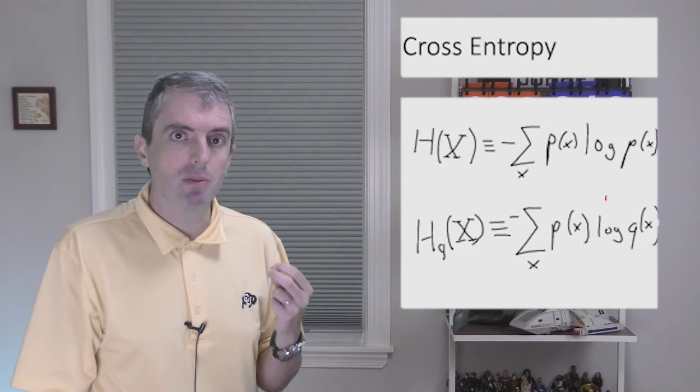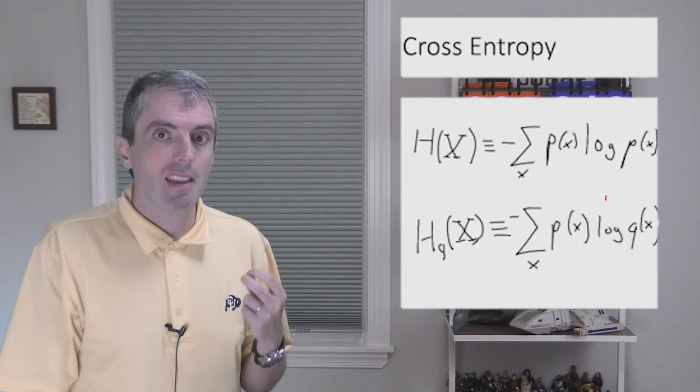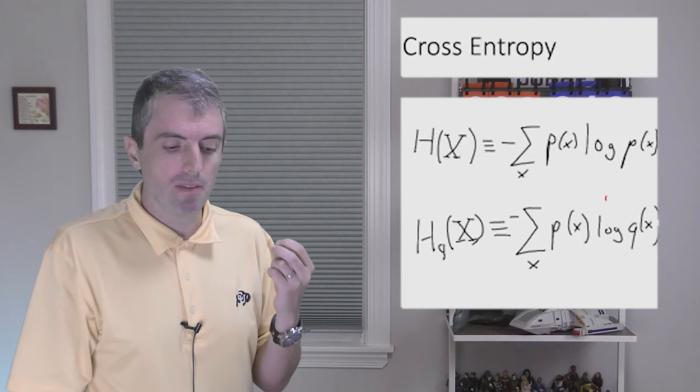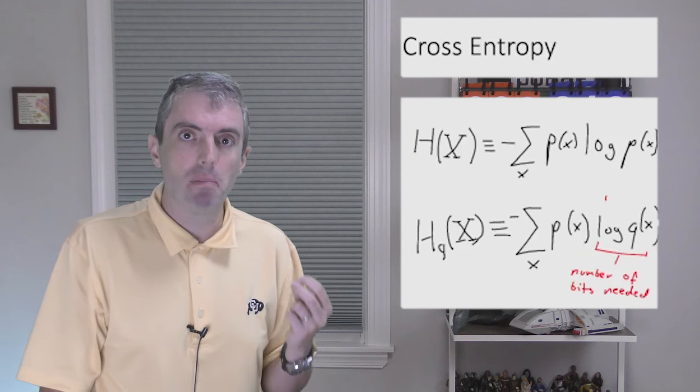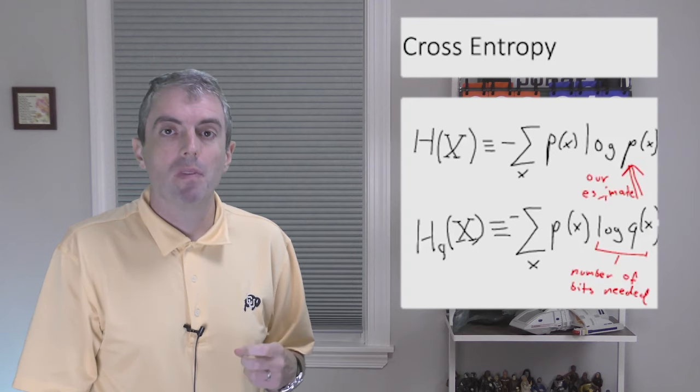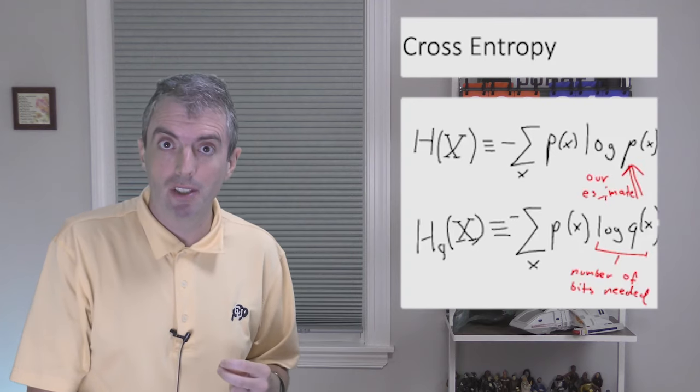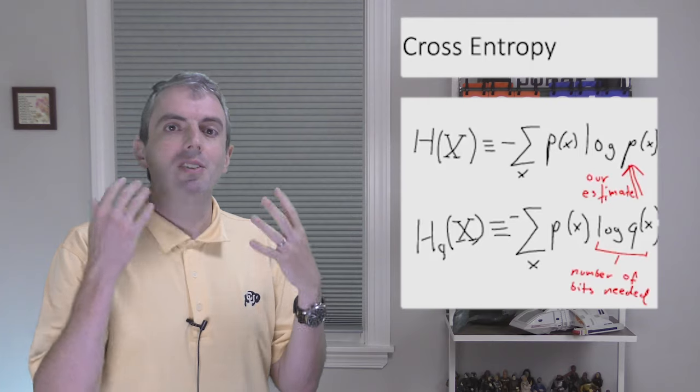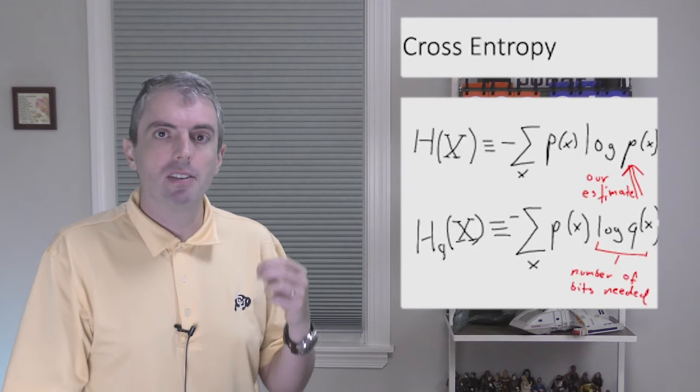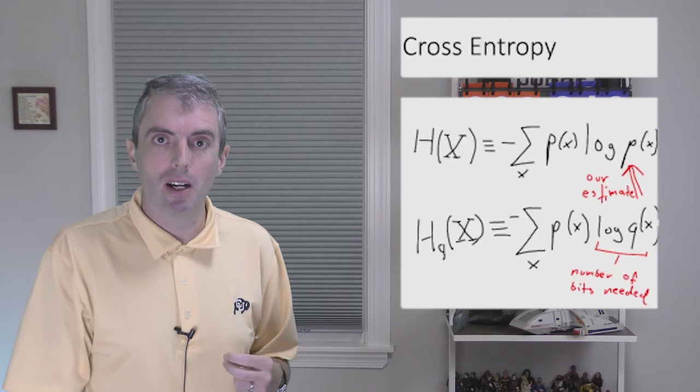But if q of x is really different from p of x, then you'll use the wrong number of bits and pay a big price for that, compared to the original distribution. Cross entropy measures just how much of a mismatch this is. So the bigger the mismatch, the higher the cross entropy.